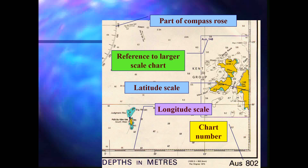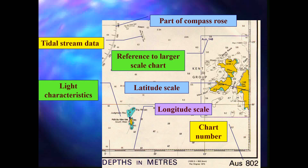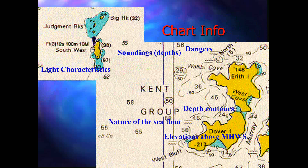I'll talk about the compass rose in the next slide. The chart also provides information about tidal stream data — the rate and direction of tidal streams are marked with an arrow, and the speed of tidal streams is marked as well. Light characteristics are also shown: for example, flashing three every 12 seconds, along with the height and range of the light. This information can also be found in the publication 'List of Lights and Radio Signals'.